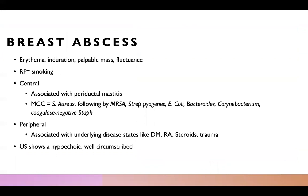Breast abscesses present as an erythematous, indurated, palpable mass with possible fluctuance. A major risk factor is smoking. There are two types of breast abscesses: central and peripheral. Central abscesses are associated with perioductal mastitis, and the most common cause is staph aureus, followed by MRSA.